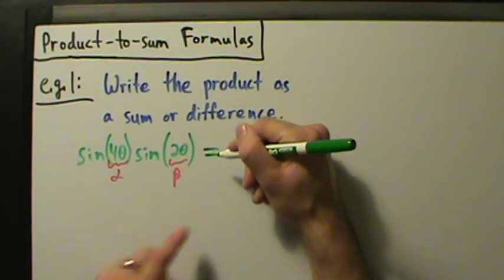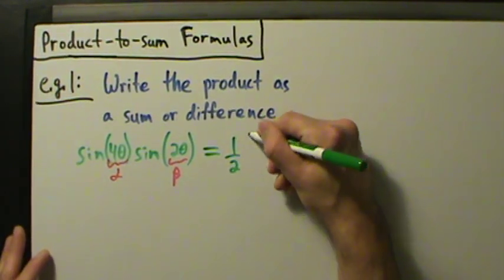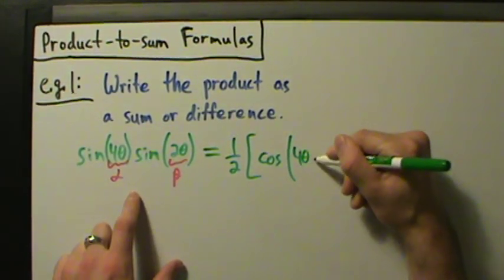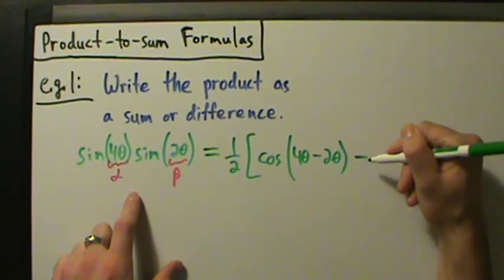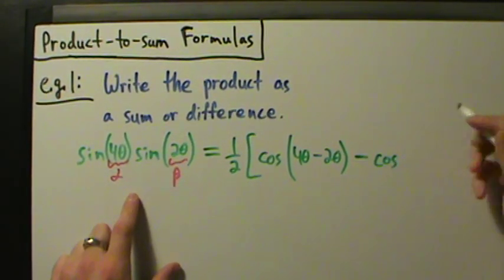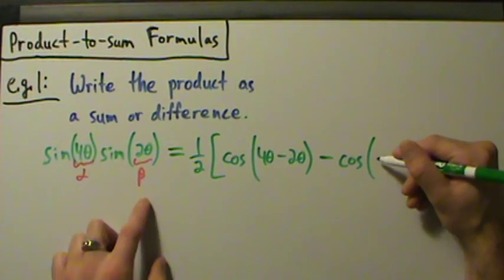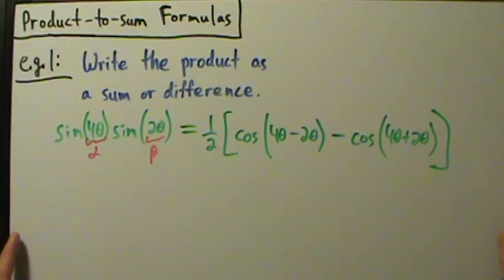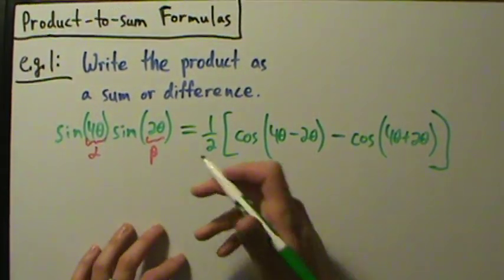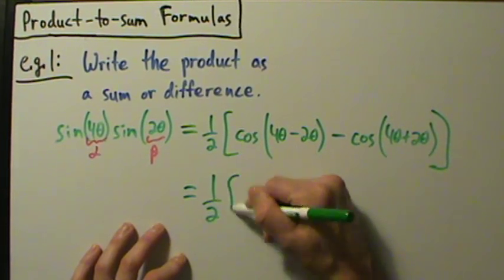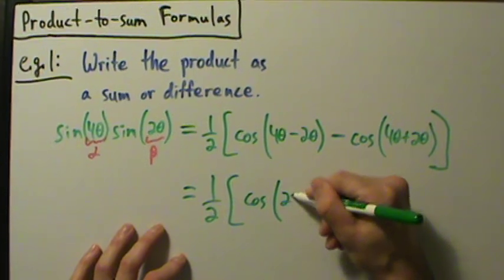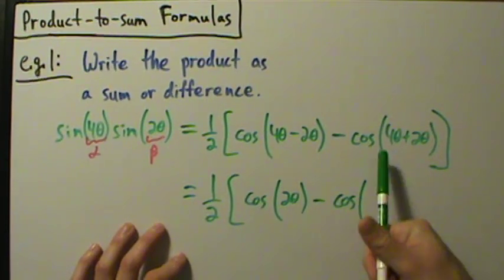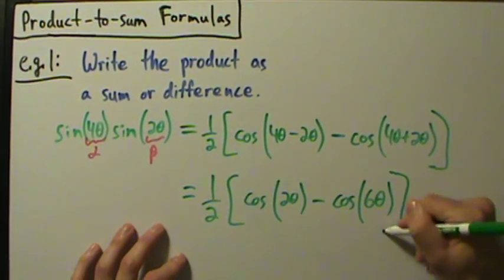So this is going to equal 1 half, big bracket, cosine of alpha minus beta — so 4 theta minus 2 theta — and then minus cosine of alpha plus beta — 4 theta plus 2 theta. We're really just plugging numbers into the formula from the formula sheet. So this is 1 half times cosine of 2 theta, minus cosine of 6 theta, close bracket.